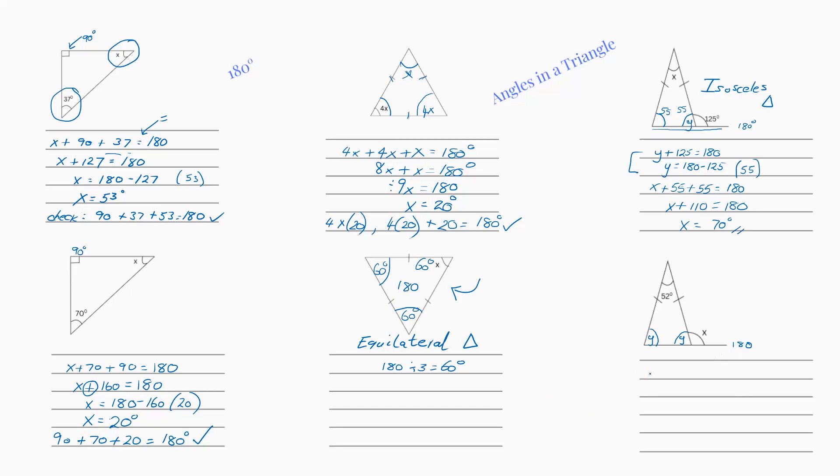So we're going to go y plus y plus 52 equals 180. So now we have 2y plus 52 equals 180. 2y equals 180 minus 52, which gives us 128. That's a bit of a brain blank there, didn't it guys? And then 128 divided by 2 is 64.